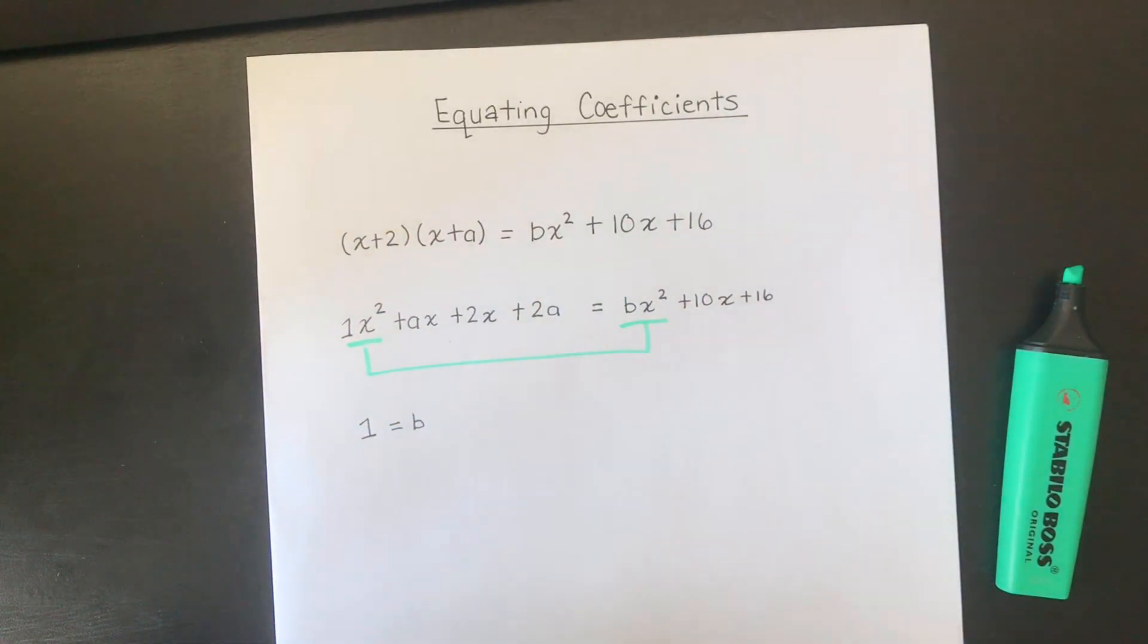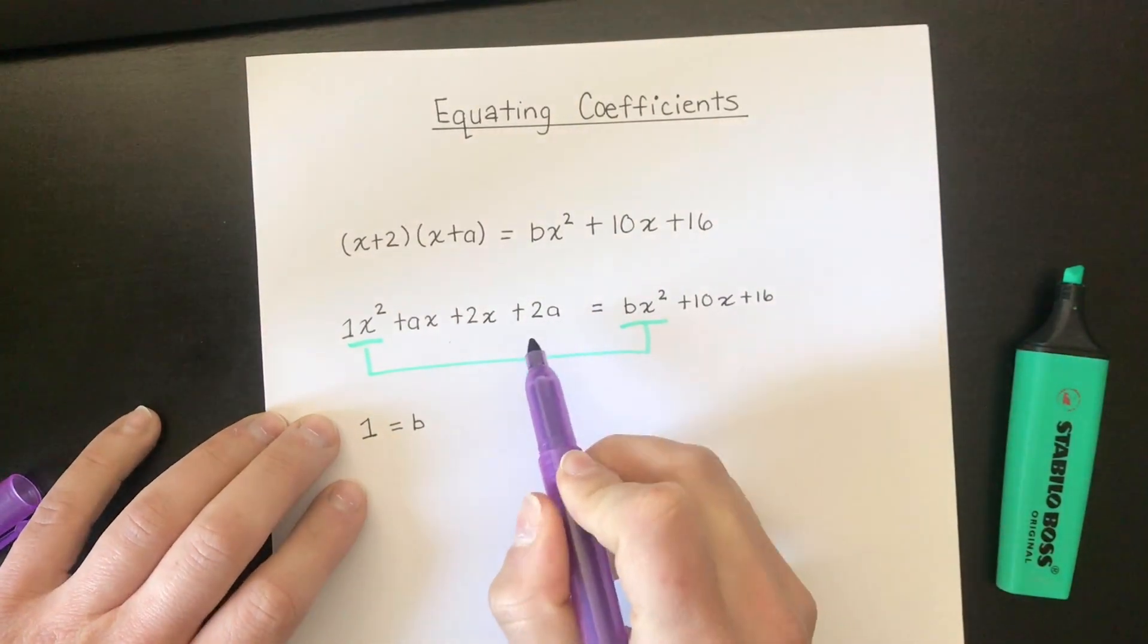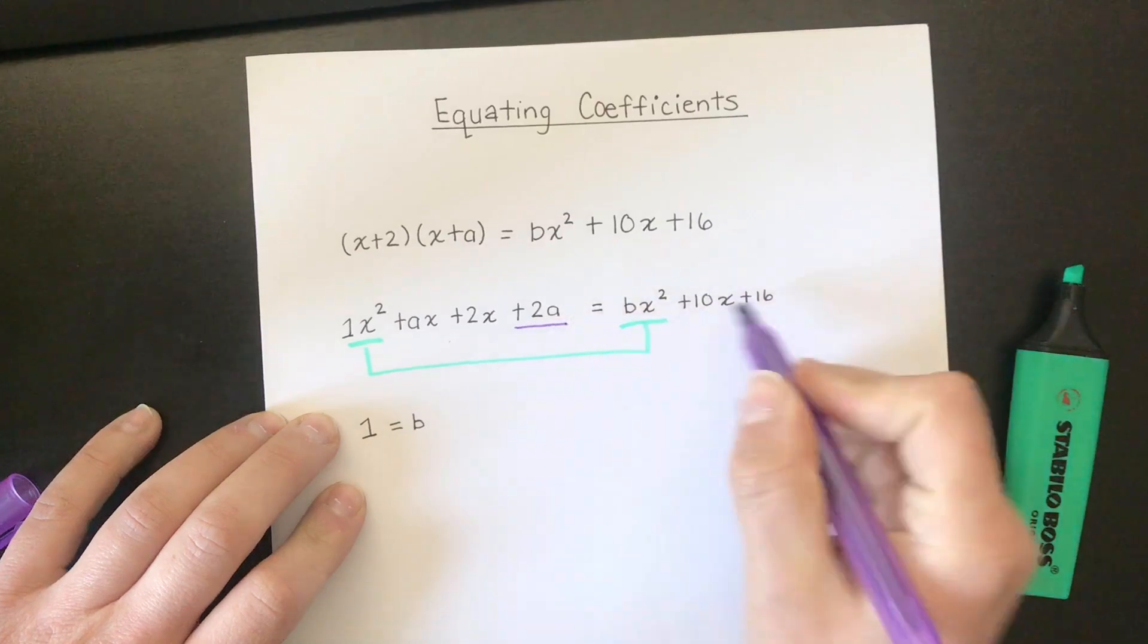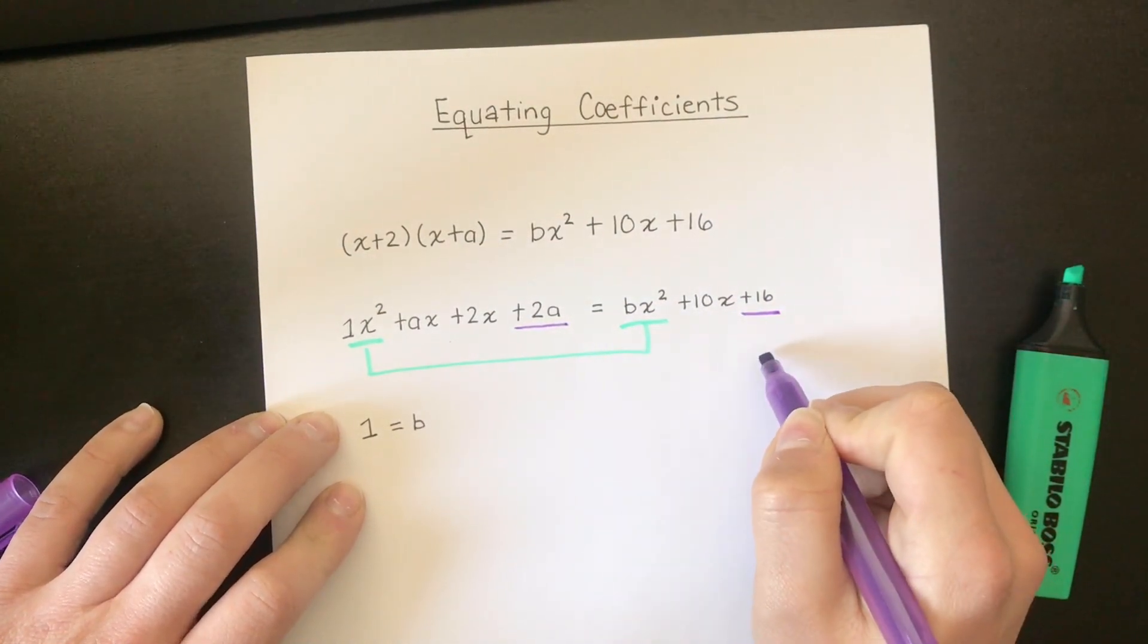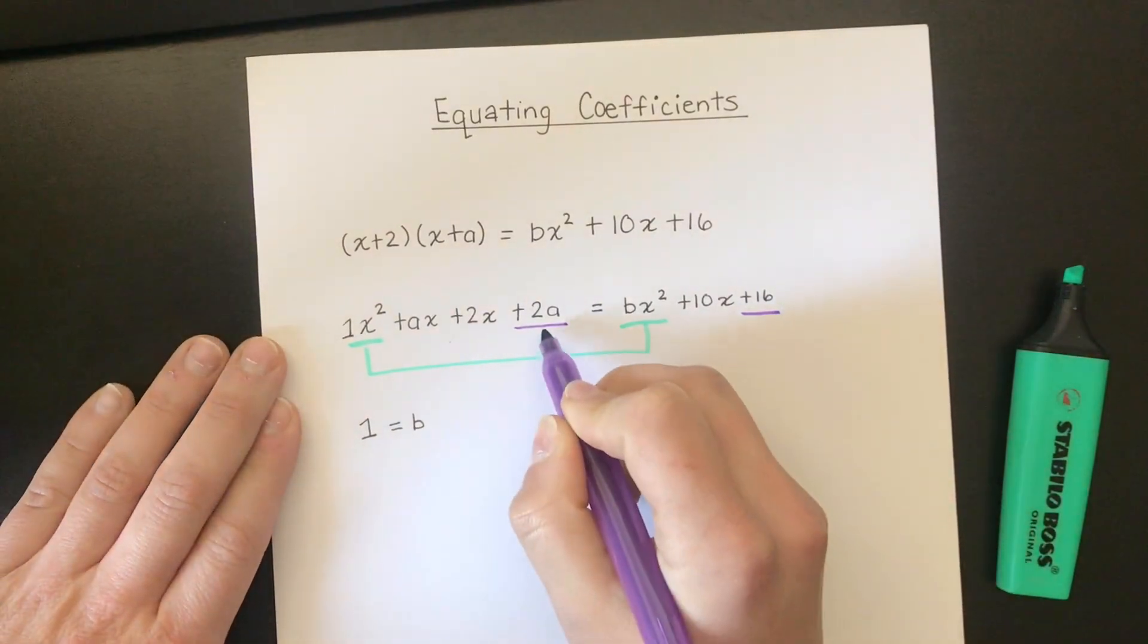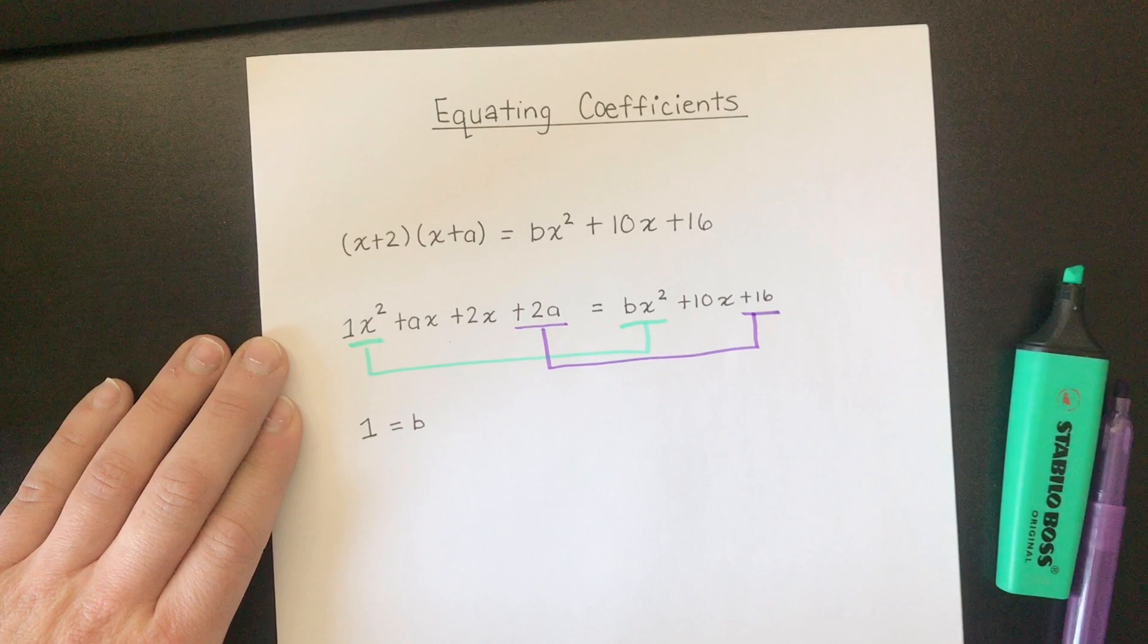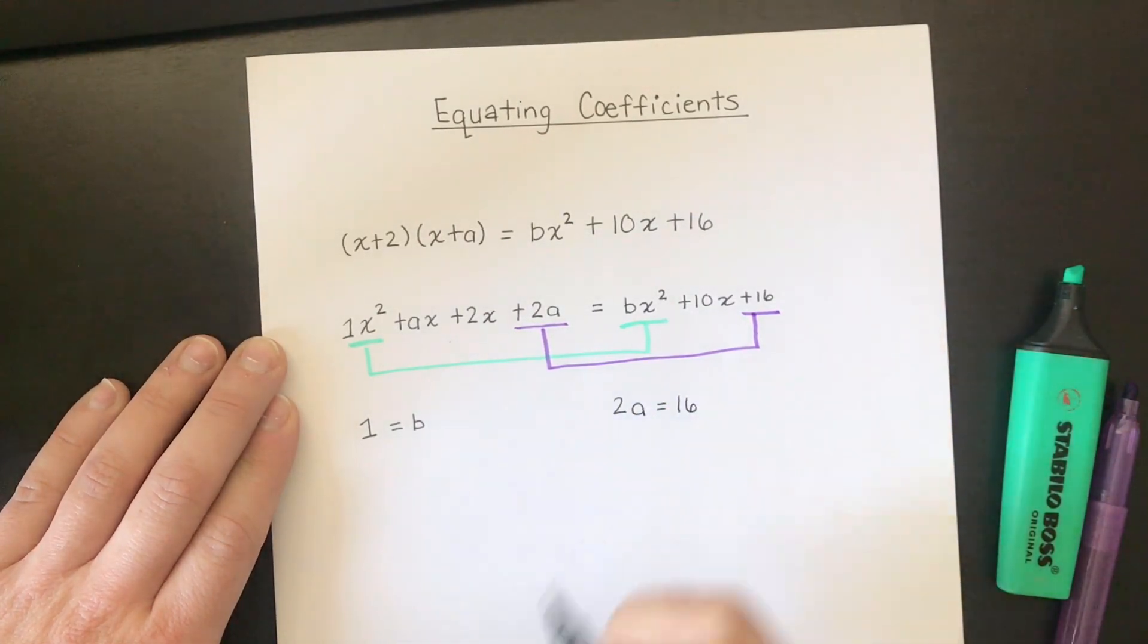Similarly this is the only term on the left-hand side that doesn't have an x in it. So this term here has to be the same as this term over here because this is also the only term that doesn't have an x in it. So these two things are going to be equal to each other. So from that I can say that 2a is going to be equal to 16.